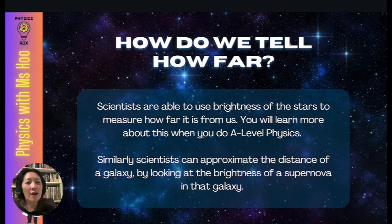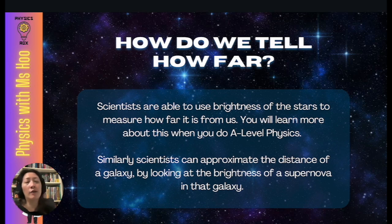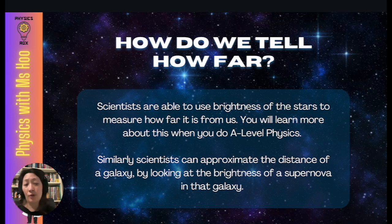How do we tell how far away those stars or galaxies are? Scientists can use the brightness of stars to measure distance, though we won't cover that in detail here — it will be covered in A-level physics. Similarly, scientists can approximate the distance of a galaxy by looking at the brightness of a supernova in that galaxy. You just need to know that we can approximate the distance by looking at the brightness of a supernova.